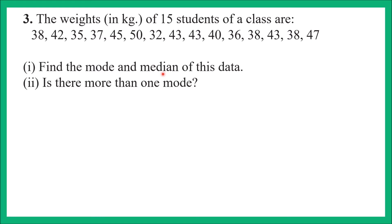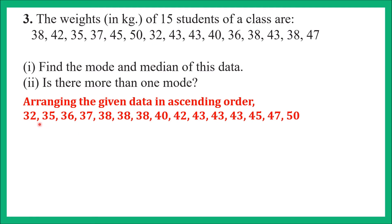I have arranged the data in ascending order. The smallest observation was 32, written first; then 35, 36, 37; then 38, which repeats 3 times, written 3 times; then 40, 42; then 43, which also repeats 3 times, written 3 times; then 45, 47, and 50. Now we need to find the mode.